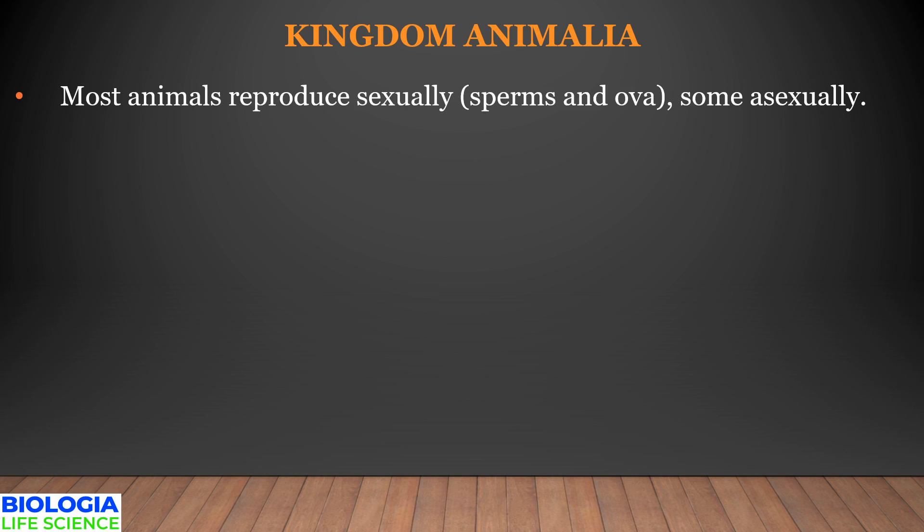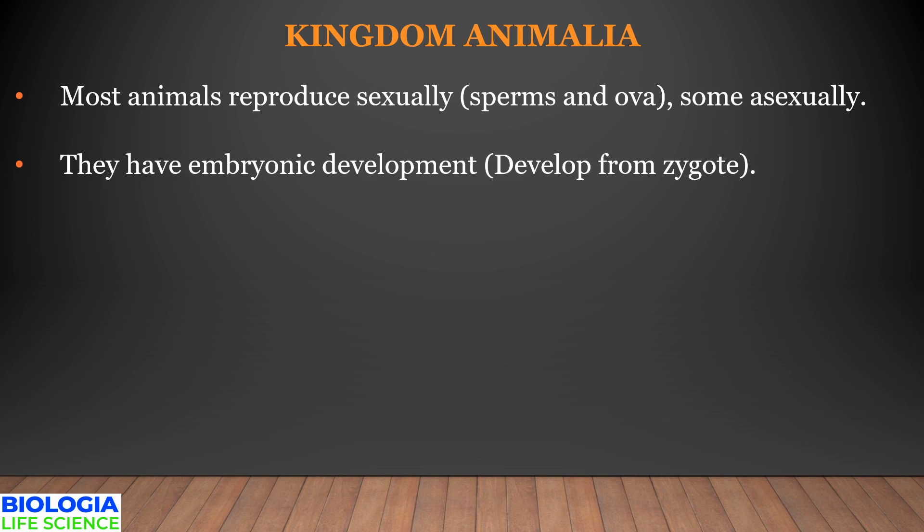Reproduction is another phenomenon where animals differ. Some reproduce sexually, by the fusion of sperms and ova, while some reproduce asexually, like budding in Hydra. Regeneration may also be considered a type of asexual reproduction, as in the case of Planaria. In sexually reproducing organisms, embryonic development takes place, where sperm and ova fuse to form a diploid zygote.